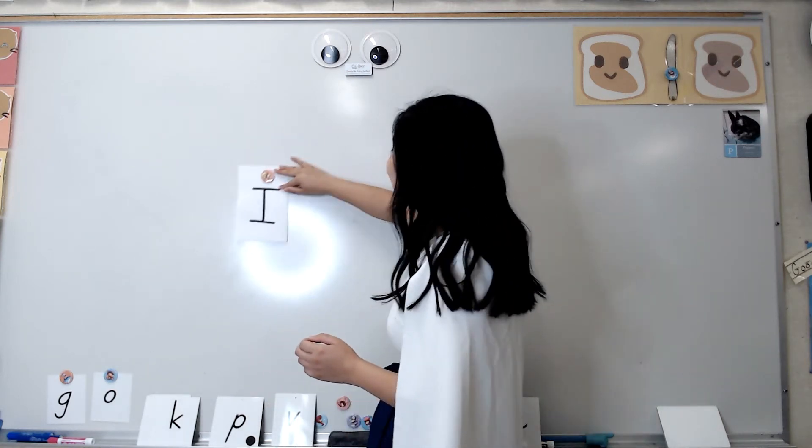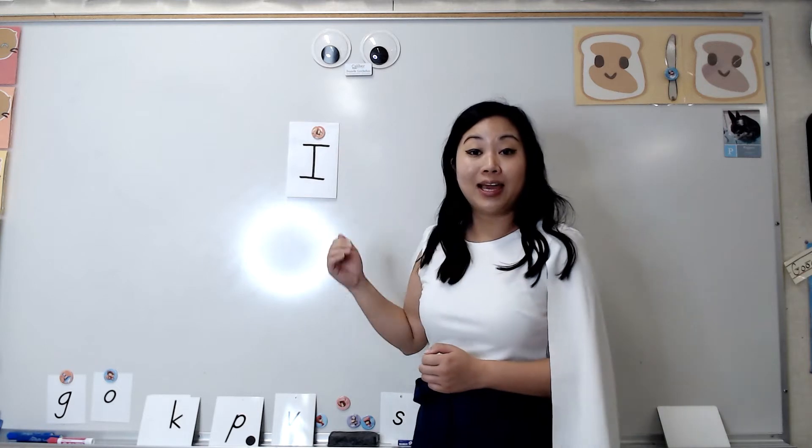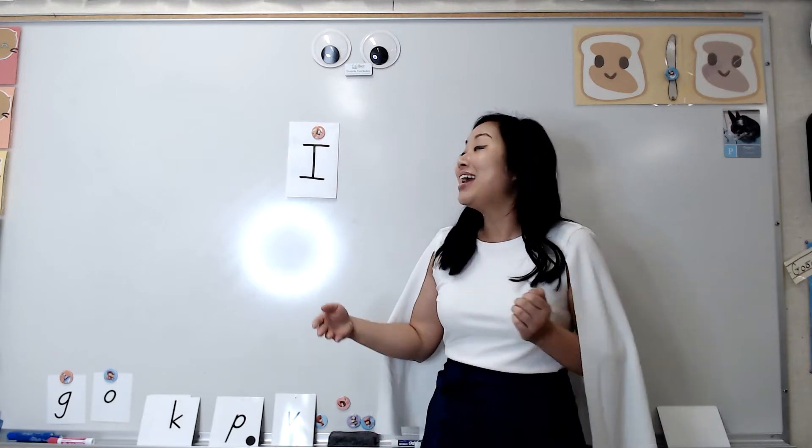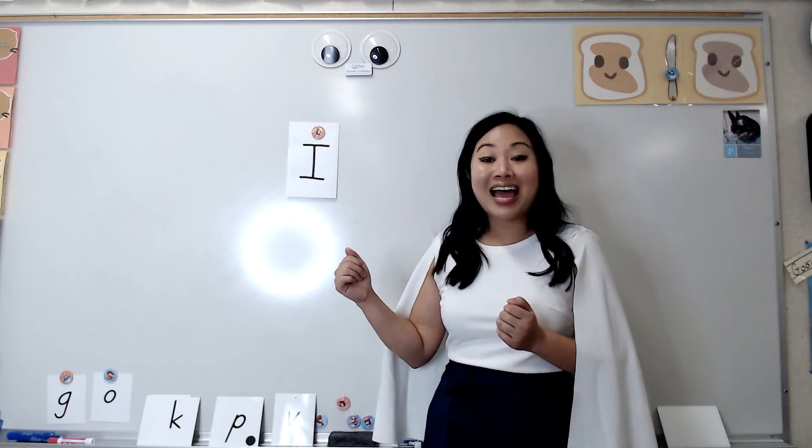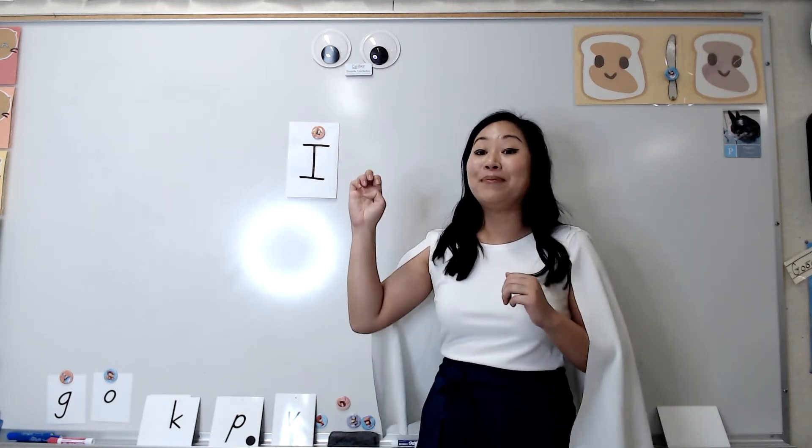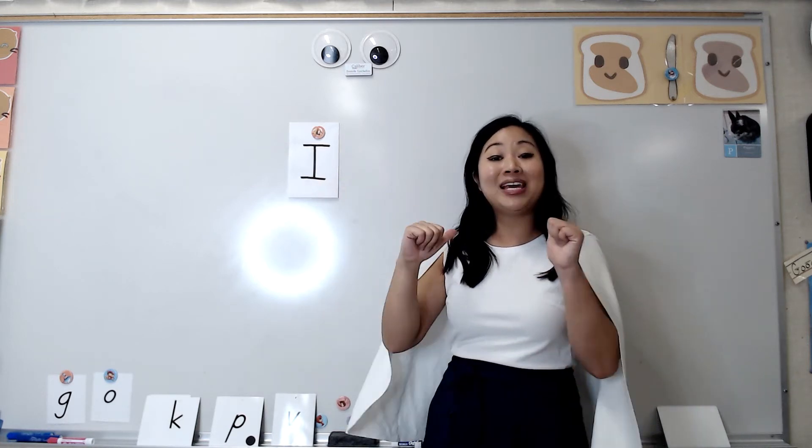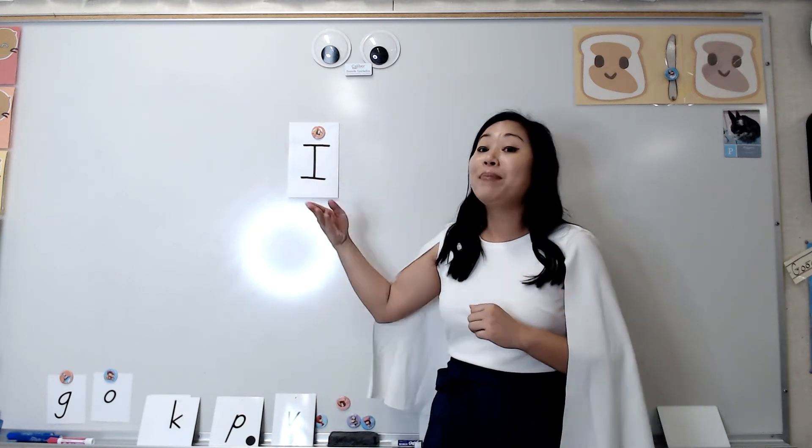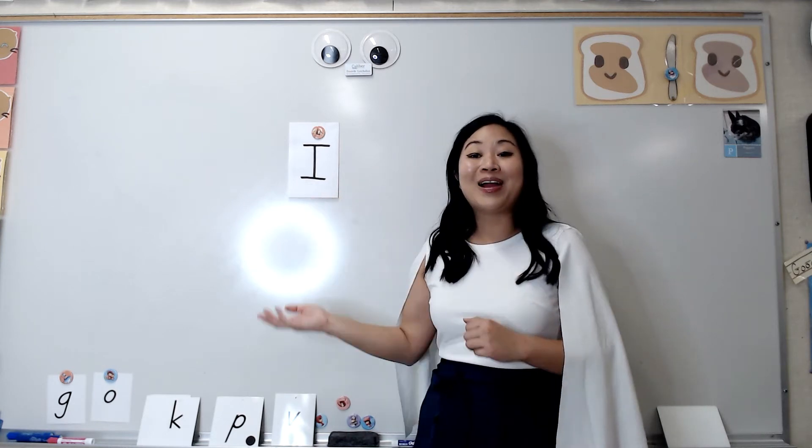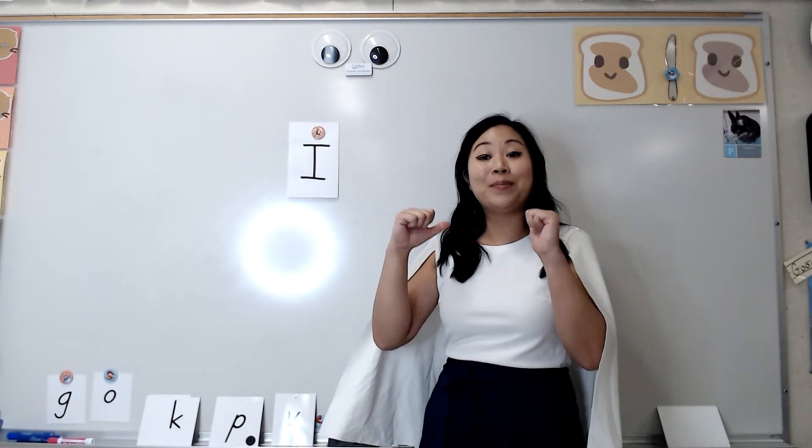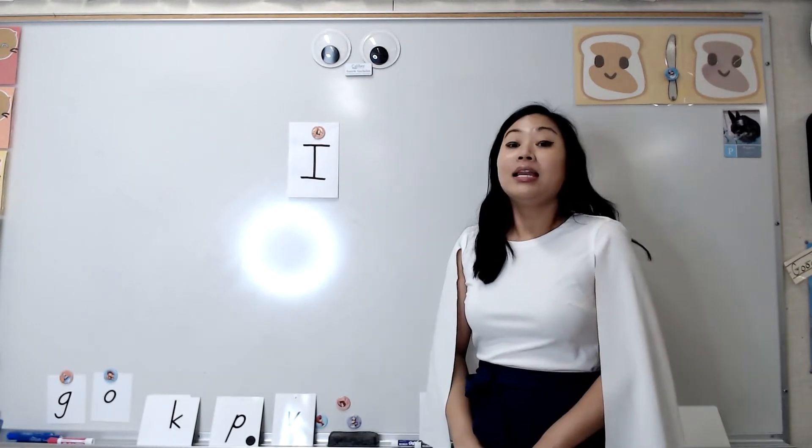What does this word say? Well, this is I. Remember, capital I spells I and I is about me, M-E. Capital I spells I and I is about me. M-E. Capital I is a letter and it's all about me. Capital I spells I and I is about me, M-E.